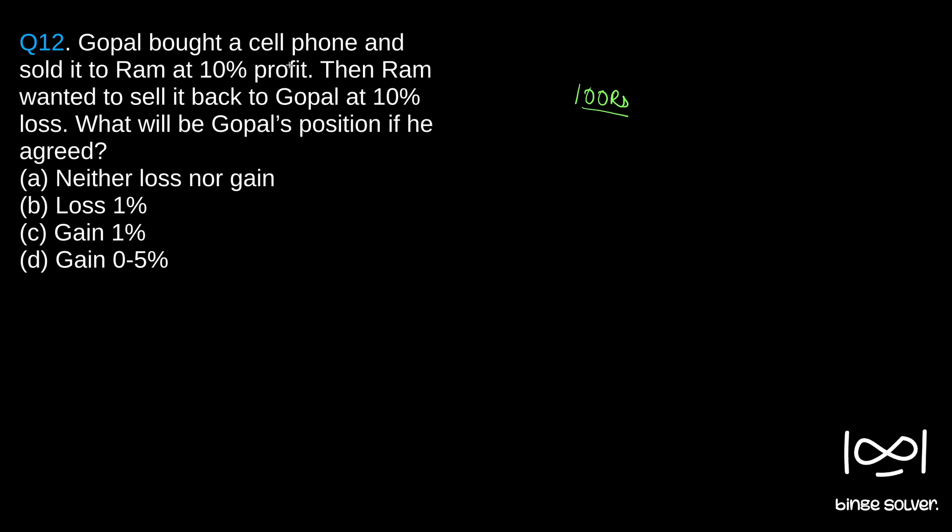That is the easiest approach in such questions. Since he sold it to Ram at 10% profit, that means 10% of 100 is 10 rupees. So he sold it for 100 plus 10, which is 110 rupees. So 110 rupees he sold it to Ram.